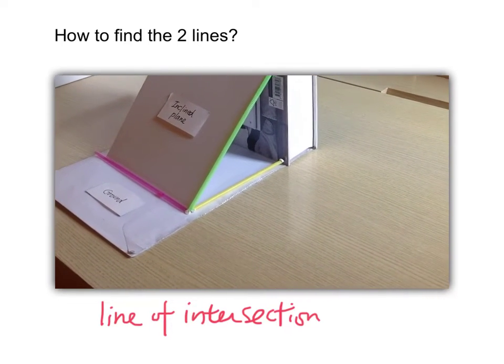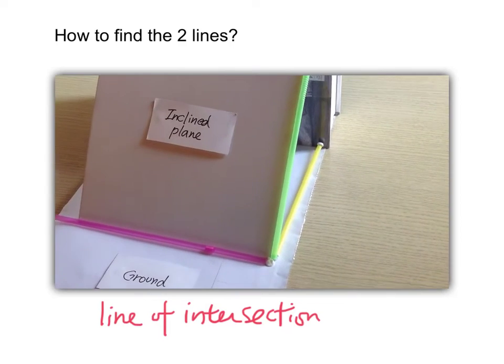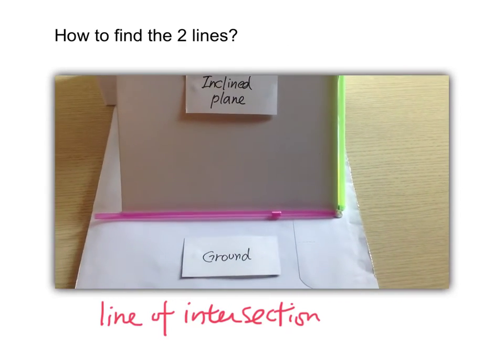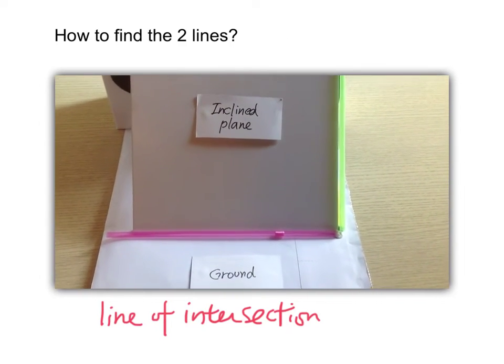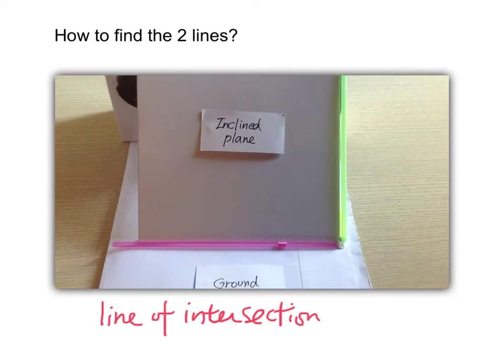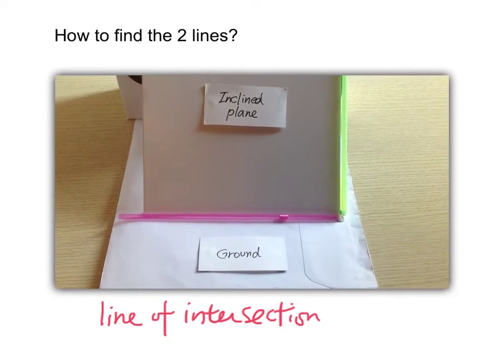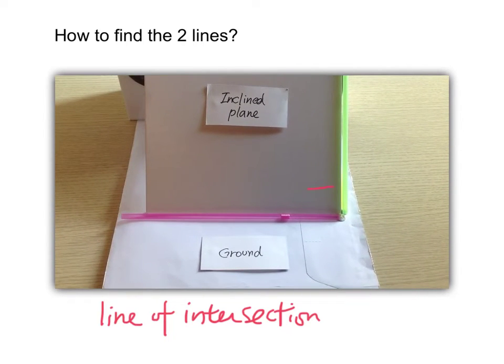So at the same time, the two lines are also perpendicular to the red line. And if we change the angle of the camera, we can see that there are two right angles here. This is a 90 degree, this is another 90 degree.